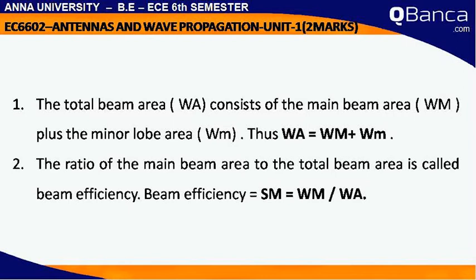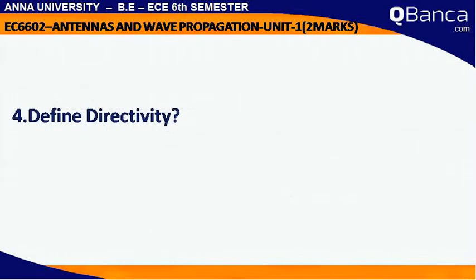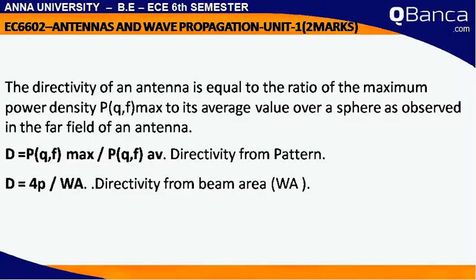Beam Efficiency is equal to epsilon_M, which equals W_M divided by W_A. Define Directivity: The directivity of an antenna is equal to the ratio of the maximum power density P(θ,φ)_max to its average value over a sphere as observed in the far field of an antenna. D equals P(θ,φ)_max divided by P(θ,φ)_avg. Directivity from pattern: D equals 4π divided by W_A, where W_A is the beam area.